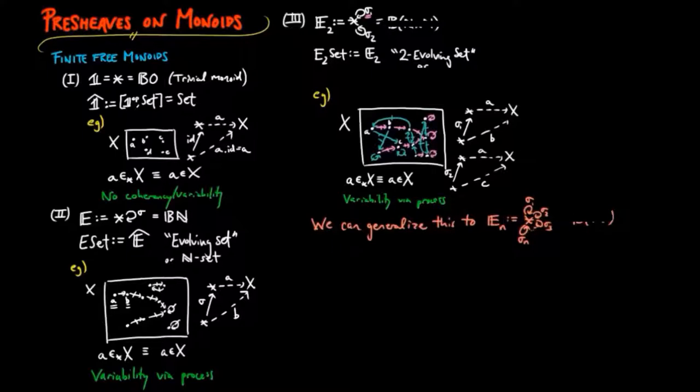Next, we turn to finitely generated monoids. In other words, finitely free monoids modulo a set of relations. So our fourth example is the category E1R with one object generated by a non-identity morphism sigma subject to the relation that sigma-squared is the identity.